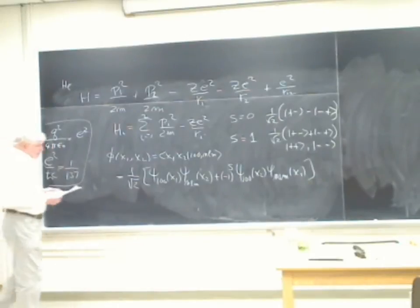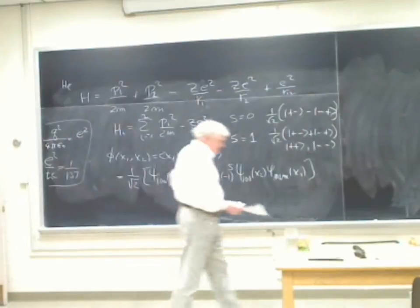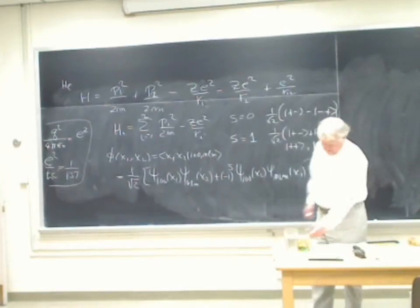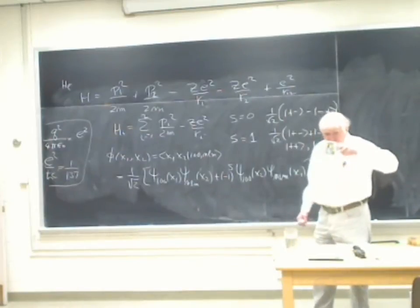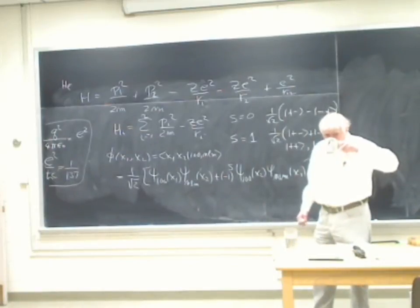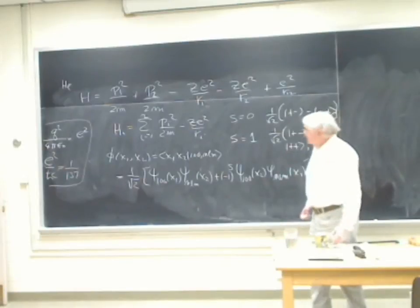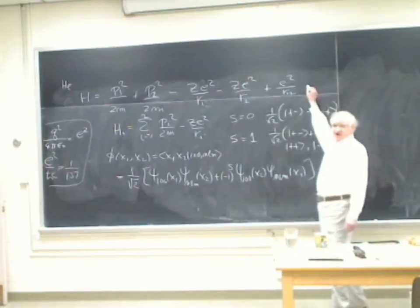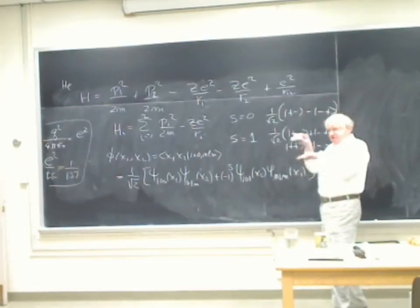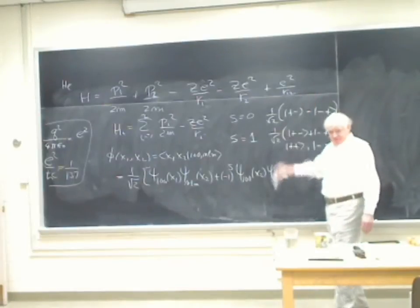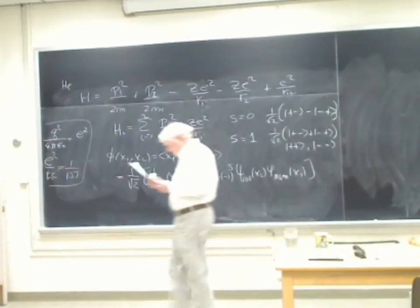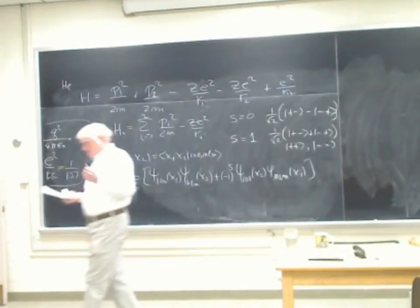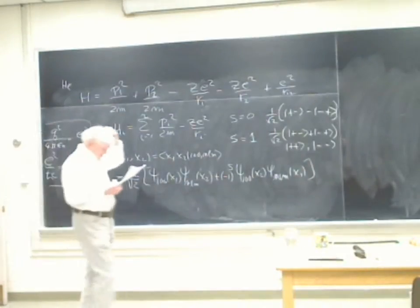When we look at the excited states of the helium atom, we'll see that even though the Hamiltonian doesn't involve any spin operators, the energy level is dependent on the spin. Something like this also happens in paramagnetism.